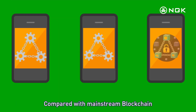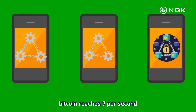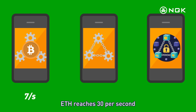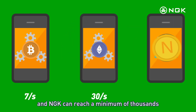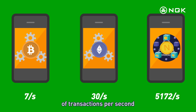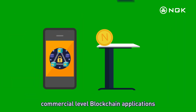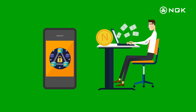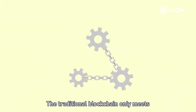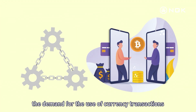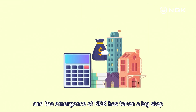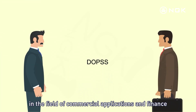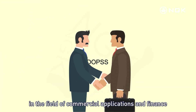Compared with mainstream blockchain, Bitcoin reaches 7 transactions per second, ETH reaches 30 per second, and NGK can reach a minimum of thousands of transactions per second, so it can meet the needs of commercial-level blockchain applications. The traditional blockchain only meets the demand for currency transactions, and the emergence of NGK has taken a big step in the field of commercial applications and finance.